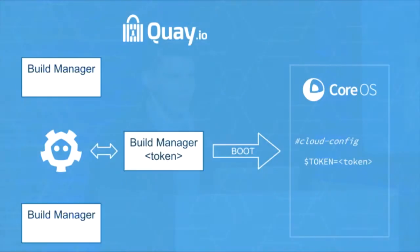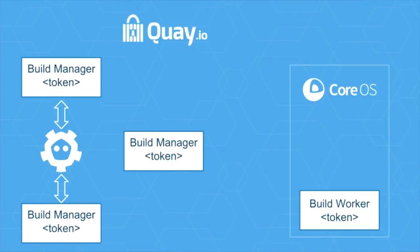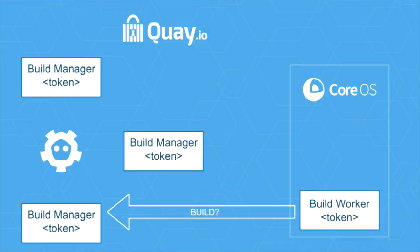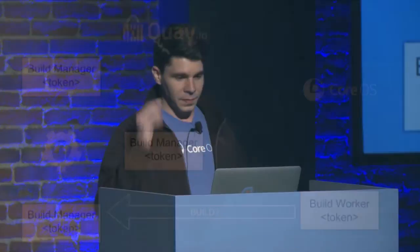etcd uses the Raft algorithm, which is simple to understand and easier to implement. When the build manager spawns a new machine and generates a token, we write that token into etcd. etcd turns around and writes that same token into all the other build managers — this is what actually makes them symmetric. So when a build worker comes to any build manager and says 'I've got this token, do you have a build for me?' literally any build manager can give it the information it needs. This was a big boon to the stability of our infrastructure.